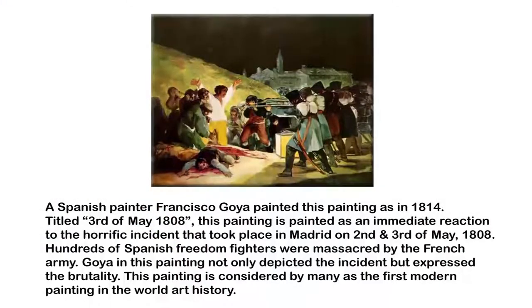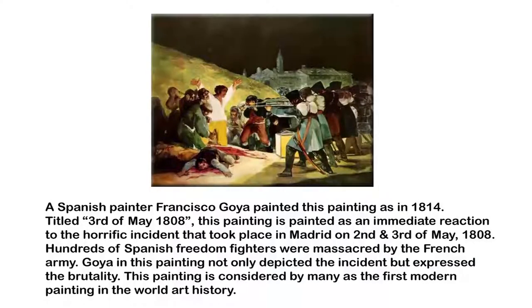The title of the painting suggests something that had happened just a few years back, that is in 1808. This painting is an immediate reaction to the horrific incident that took place in Madrid on the 2nd and 3rd of May 1808, when hundreds of Spanish freedom fighters were brutally massacred by the French army. Goya is not exactly depicting the incident the way a history painter would — he is evoking certain emotions, expressing his anguish, his anger, his panic, his hopelessness, sympathising with the victims. This painting has been considered as the first modern painting in the world of art history.